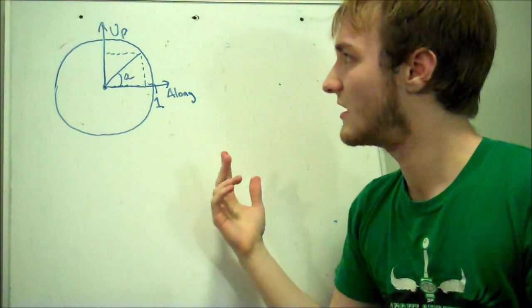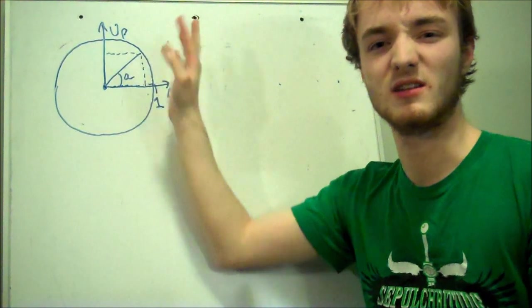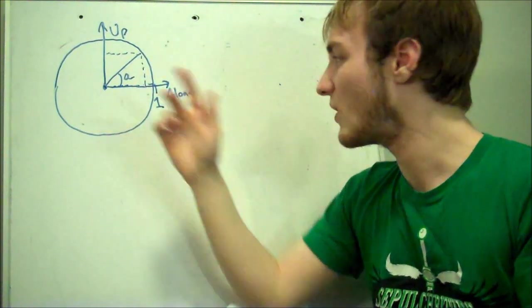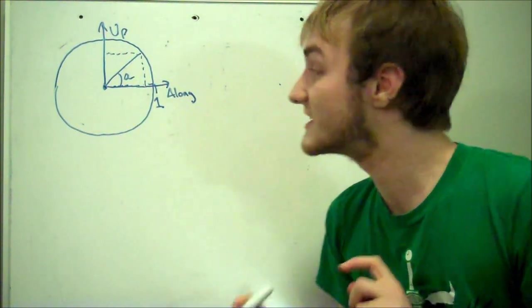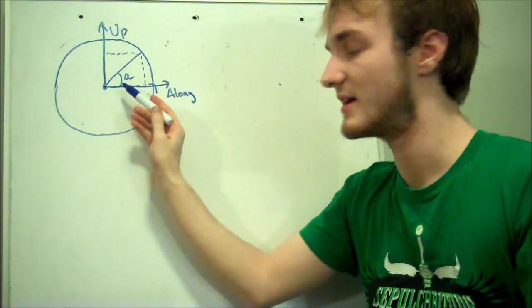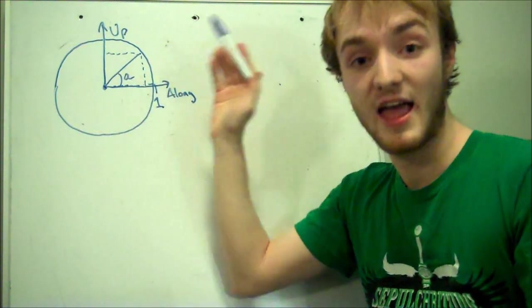This is an interesting question, because if you think about it, when it's all the way up, it's going to be up by 1 and along by 0. We need to invent these two machines to help us out with this. So this line is at angle A, A for angle.